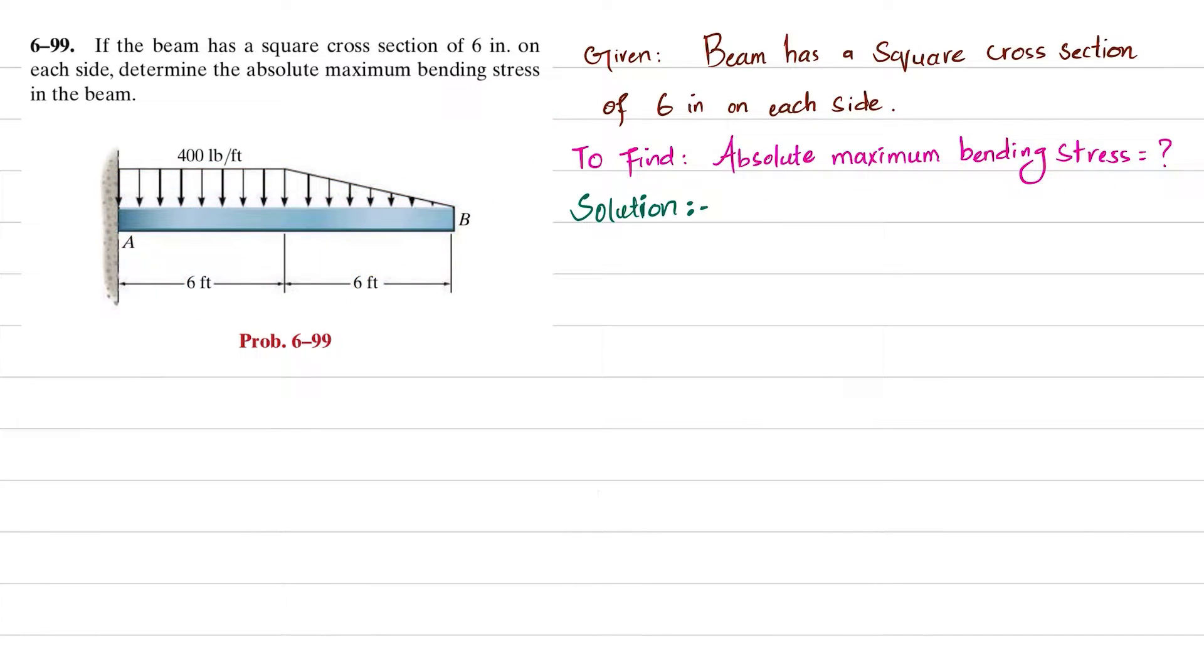Let's start with the solution. First, remove the support of the cantilever beam and draw the free body diagram. You will have a reaction force at point A, which is R_A, and there will be a moment as well, which is M_A. From a distance of 6 feet from one end, there is a uniformly distributed load of 400 pounds per foot. In the remaining 6 feet, you have a uniformly decreasing load.